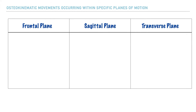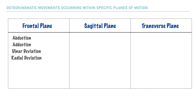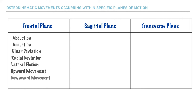Now we'll revisit those planes of motion and list the osteokinematic movements that occur within each plane. First, within the frontal plane, we have movements such as abduction, adduction, ulnar deviation, radial deviation, lateral flexion, and we can also add upward movement and downward movement.